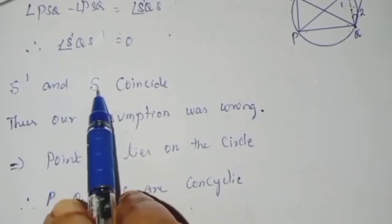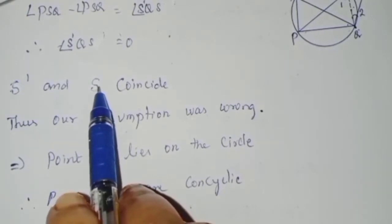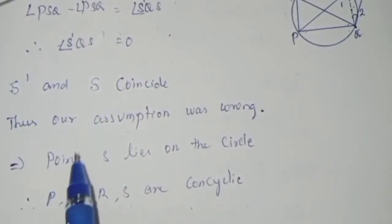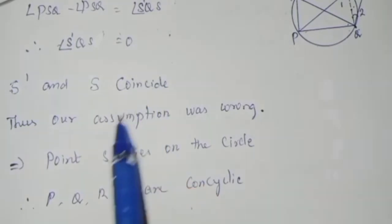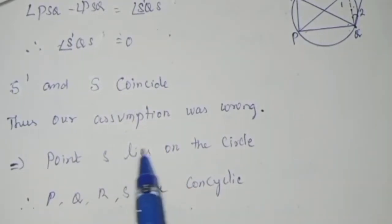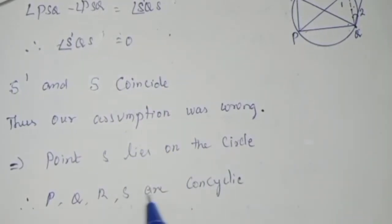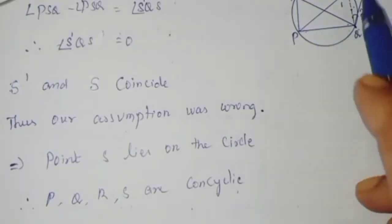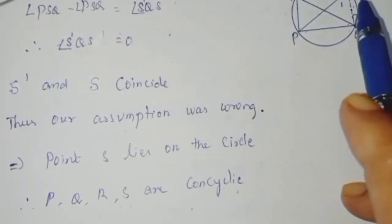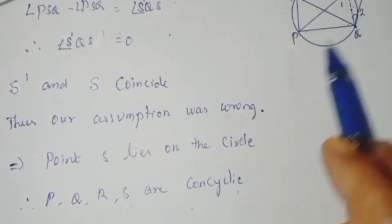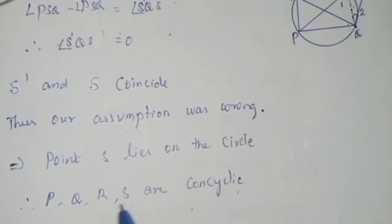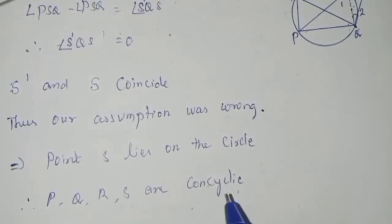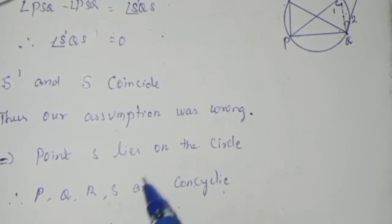Since S' and S coincide, our assumption is wrong. Therefore, point S lies on the circle, and P, Q, R, S are concyclic. Hence the given statement is proved.